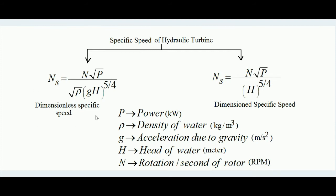On the left hand side, I have written the formula of dimensionless specific speed: ns equals n times root(P) divided by root(rho) times (gh)^(5/4). Here n is in RPM, P is power in kilowatt, rho is the density of fluid used. For hydraulic turbines the fluid is generally water, so rho is the density of water, g is acceleration due to gravity, and h is the head available in meters. If we substitute dimensions for all these variables, we get no dimension — so this is dimensionless specific speed.